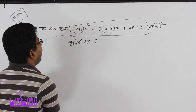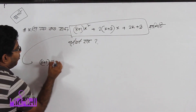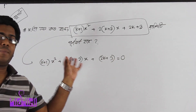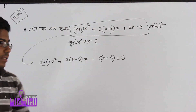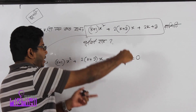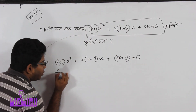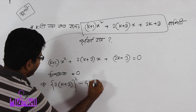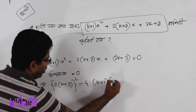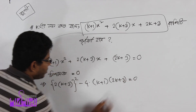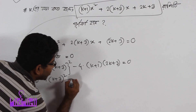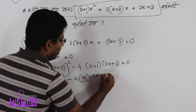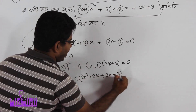The rachita of x is 0. Now, the discriminant equal to 0: 4k plus 3 whole square minus 4 into 2k squared plus 2k plus 3k plus 3 equal to 0.